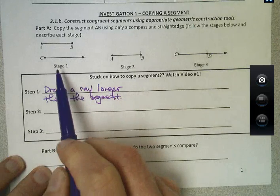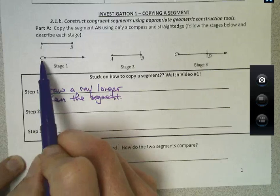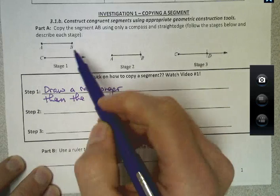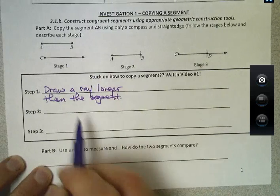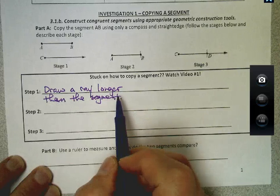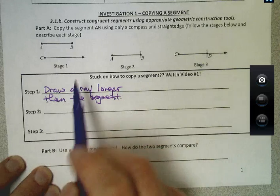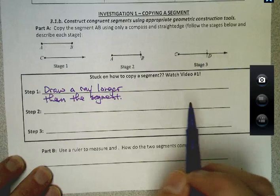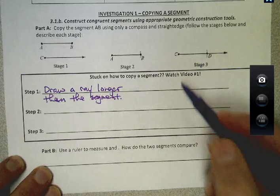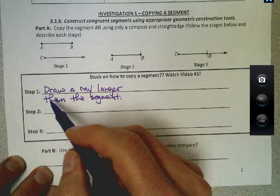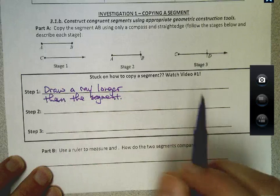So we can see here in stage 1 we've drawn a ray that starts at C and goes to the right, and it's a little bit longer than my segment. You want to make sure that wherever you draw your ray it's longer than the segment you're going to draw. We'll go through these steps after we get down what each of these stages is.